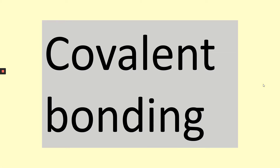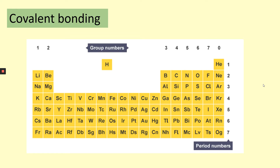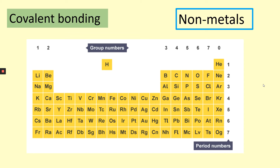Hi guys, today we're going to look at covalent bonding, which is another type of bonding. We've looked at ionic so far — today's lesson is covalent, and then we have metallic bonding as well to look at. On your screen you can see a periodic table with the group numbers along the top: one, two, three, four, five, six, seven, and zero, and the period numbers down the side. Covalent bonding only occurs between non-metals. Ionic bonding, which we did the other week, was the bonding between a metal and a non-metal.